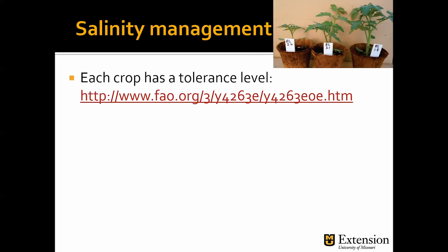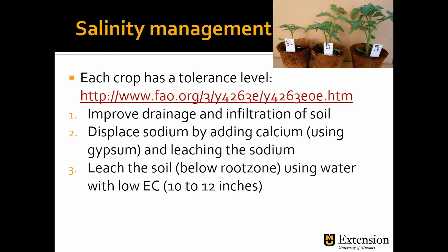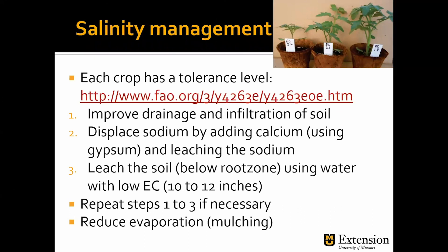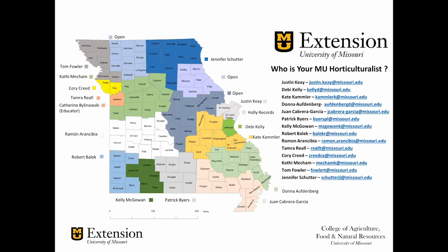So how do you manage high salinity? First, you need to know the tolerance levels for your crop — you can use the link on screen to see tolerance levels for each crop. Then get a soil and water test to determine if you need to address salinity issues. If you do, use these steps: first, mechanize the soil to improve drainage and infiltration; if you have high sodium content, consider adding calcium to displace the sodium from the soil; then apply 10 to 12 inches of high-quality water with low electrical conductivity. Repeat these steps until you reach the desired levels. Also think about practices to reduce water evaporation, such as mulching. In high tunnels, it is common for soils to develop nutrient imbalances and high salinity — you can leave the high tunnel open during winter and early spring and let snow and rainfall wash off the salt accumulation. If you have additional questions, you can reach us anytime.